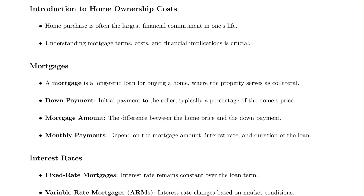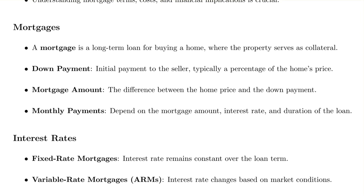In this section we'll calculate the monthly cost associated with a house mortgage and discuss some other things related to homeownership. Let's begin with some definitions: a mortgage is a long-term loan for buying a home, and the property serves as collateral for the loan. The down payment is the initial payment to the seller, typically a percentage of the home price, dependent on the loan you get. The mortgage amount is the difference between the home selling price and the down payment.